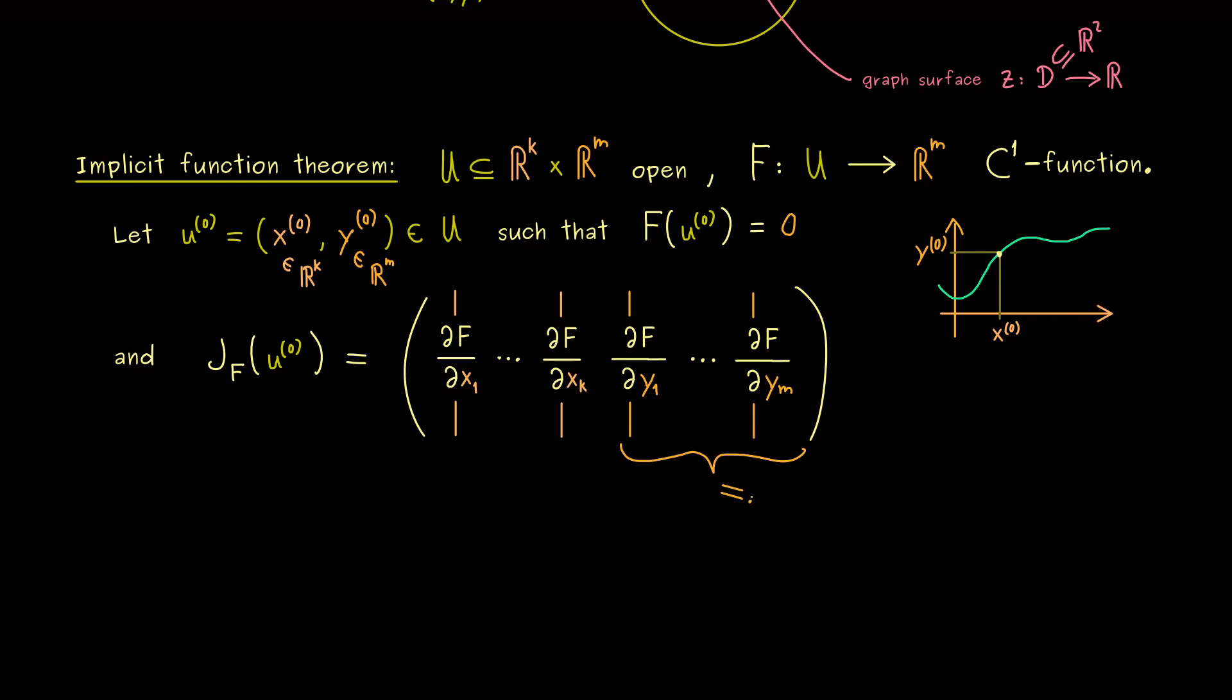And here it's useful to introduce a short name for that. Let's write ∂F/∂y. So we write a partial derivative symbol, but what we actually mean is a whole matrix. It makes sense, because F is a vector-valued function and y represents also m variables. Hence, we can use a similar notation for the left-hand side, but this is not a square matrix. Of course, in general m is not equal to k.